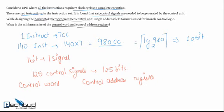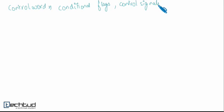Control word is a microoperation while control address register contains address of next control word. Control word comprises of conditional flags, control signals, and address of next control word.